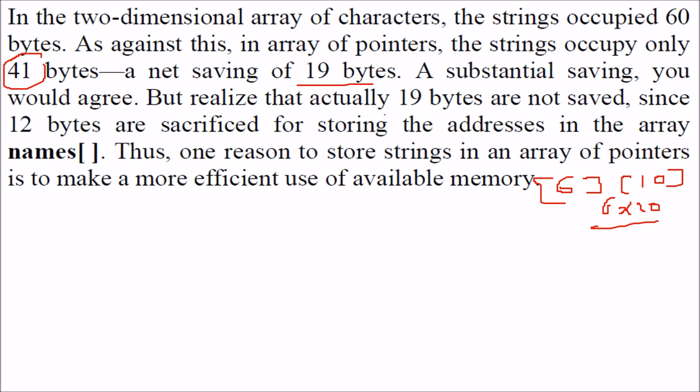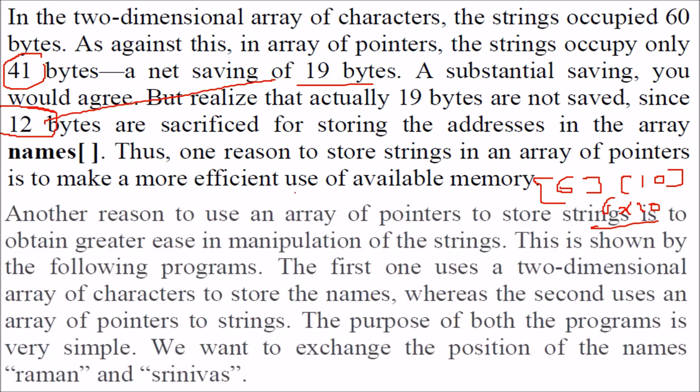You have 19 bytes but there is one more catch that for this storing of addresses you have consumed 12 bytes. So, in all you have saved only 7 bytes. So, what is the reason to store string in array of pointers? First of all, you are using efficient use of available memory as I just told you but there are other reasons also. For example,